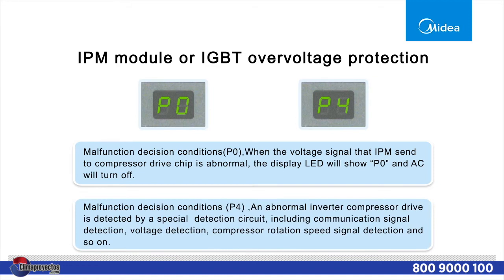Malfunction Decision Conditions, P0: When the voltage signal that IPM sends to the compressor drive chip is abnormal, the display LED will show P0 and the air conditioner will turn off.